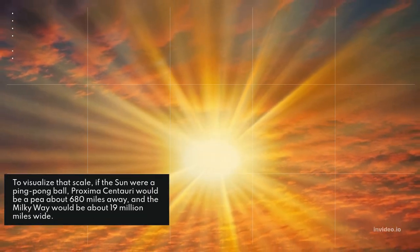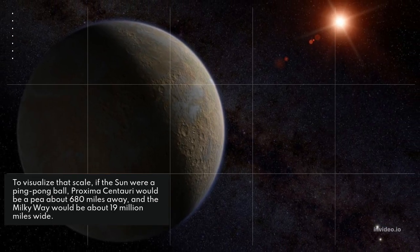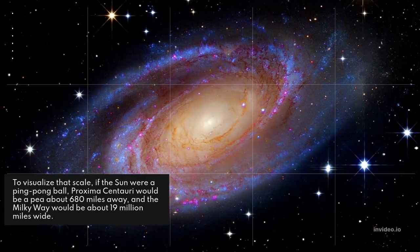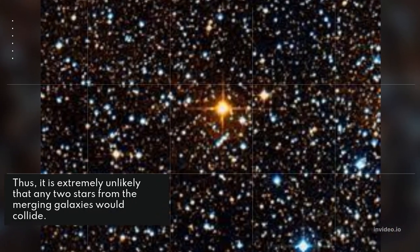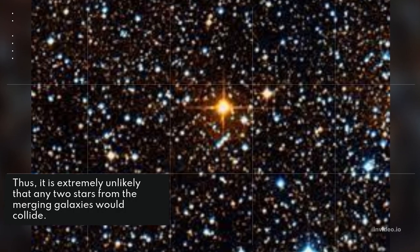To visualize that scale, if the Sun were a ping pong ball, Proxima Centauri would be a pea about 680 miles away, and the Milky Way would be about 19 million miles wide. Thus, it is extremely unlikely that any two stars from the merging galaxies would collide.